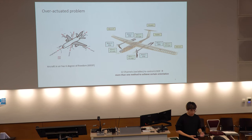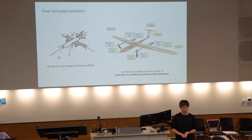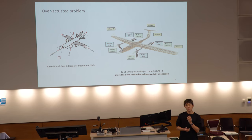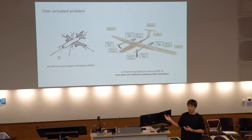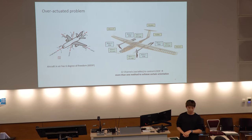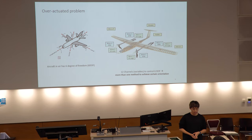Before talking more about methodologies, the platform I'm using is quite interesting because it's an overactuated problem. We know aircraft in the air has six degrees of freedom. A typical drone like a DJI quadcopter has only four variables — four RPM values — so it's underactuated. However, my platform has 12 channels, 12 variables to configure six degrees of freedom, which means it's overactuated. I may have more than one way to achieve a different orientation, and I can compare different ways to achieve different attitudes.